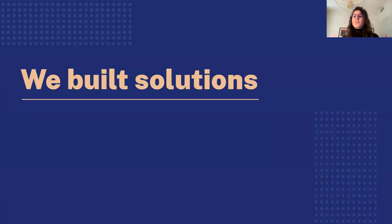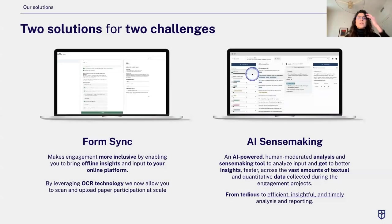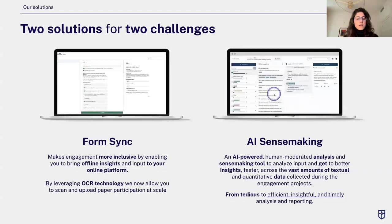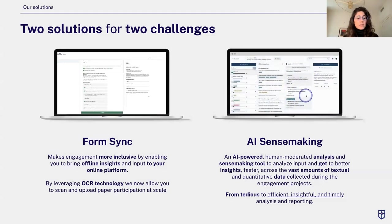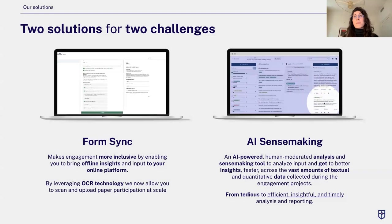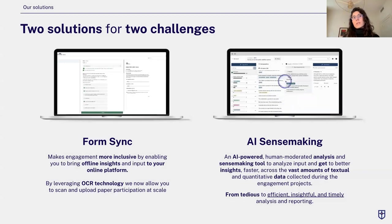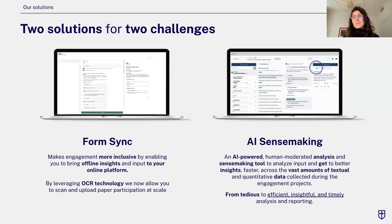We've built two solutions — consider this webinar a first installment in tackling those two challenges of inclusion and efficiency. The first solution is called Form Sync: it lets you run hybrid consultations at scale using OCR — optical character recognition — technology that scans paper forms, recognizes data captured offline, and brings it online. The second tool is AI Sense Making: an AI-powered but human-moderated analysis tool that supports you in processing and making sense of vast amounts of textual data.